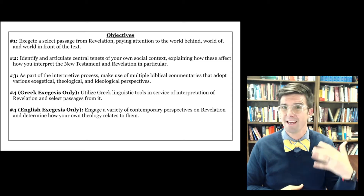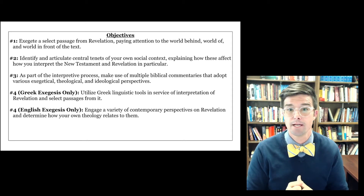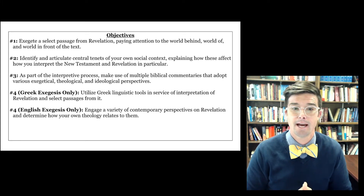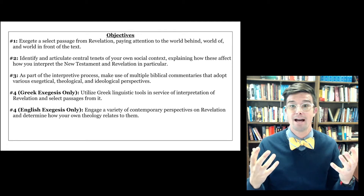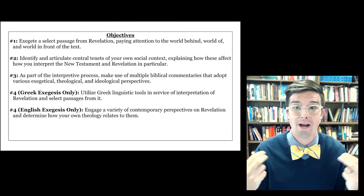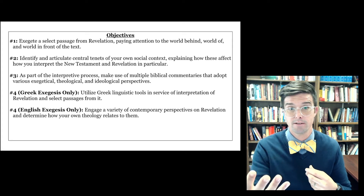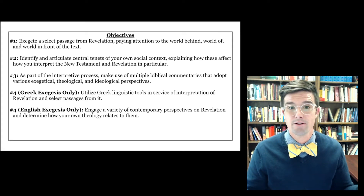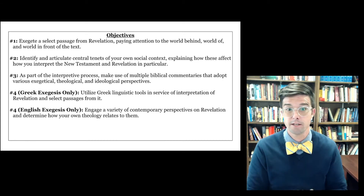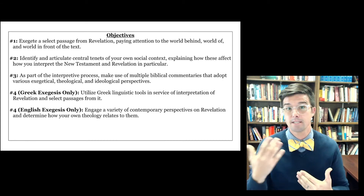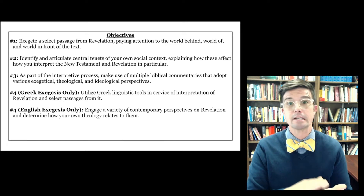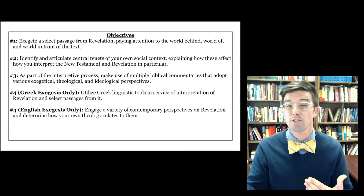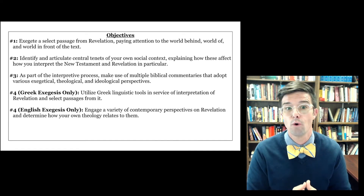The first objective is to be able to exegete a select passage from the book of Revelation, paying attention to the world behind, the world of, and the world in front of the text. By the end of this class you should be able to do exegesis — that is a skill you're going to develop here so you can use it in other settings. Our particular text is Revelation, but the skills you develop will equally apply to other New Testament texts and to a certain extent to Old Testament texts as well.